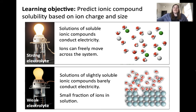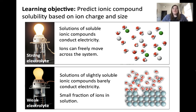A weak electrolyte contains a slightly soluble ionic compound with only a small fraction of ions in solution, meaning that these solutions do not conduct electricity as well. A non-electrolyte is a solution with an ionic compound that doesn't dissolve at all, meaning that electric charge can't travel and the solution doesn't conduct electricity at all.